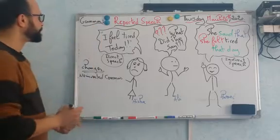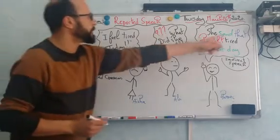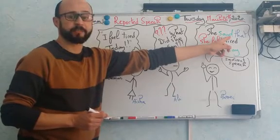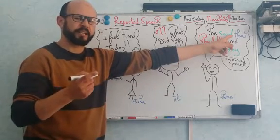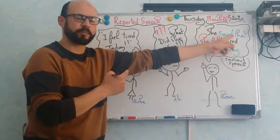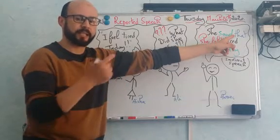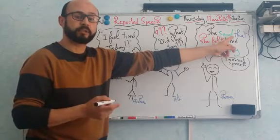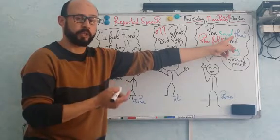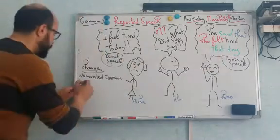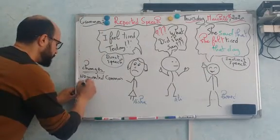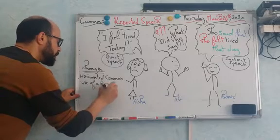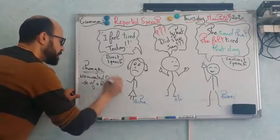The second thing: you may see the use of the reporting verb. This part is called a reporting verb. In French, you may have encountered this term when you were studying this lesson in French as the 'verbe introducteur.' In English, we call it the reporting verb. So, the second change is the use of a reporting verb.